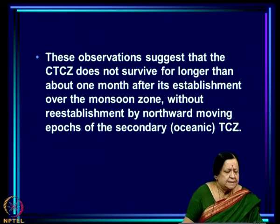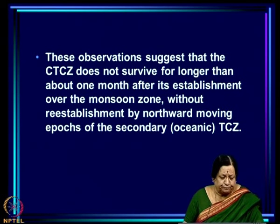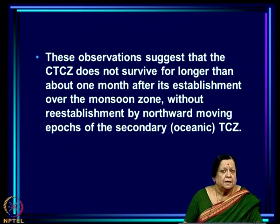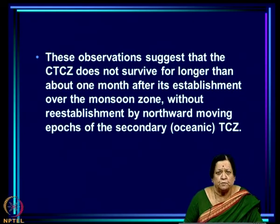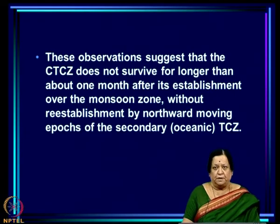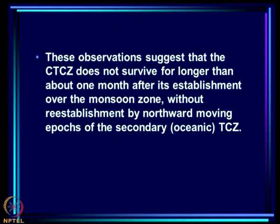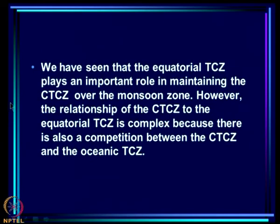What this is saying is that the continental TCZ or CTCZ cannot survive for longer than about a month after its establishment over the monsoon zone without re-establishment by northward-moving epochs of the secondary or oceanic TCZ. It needs replenishment of moisture from the oceanic TCZ one month after its first establishment; without that it cannot be maintained. This is very clear because it is seen year after year.